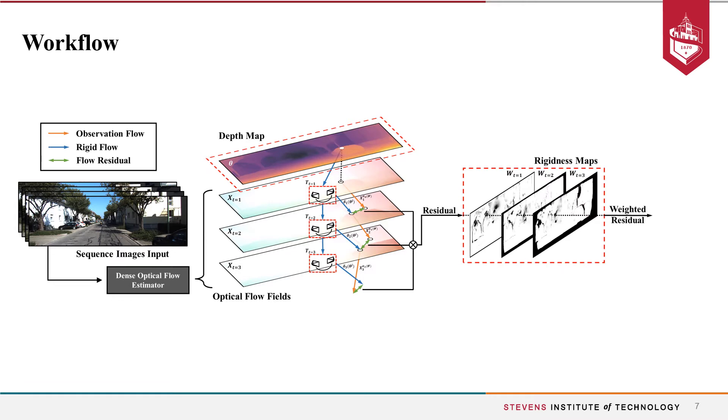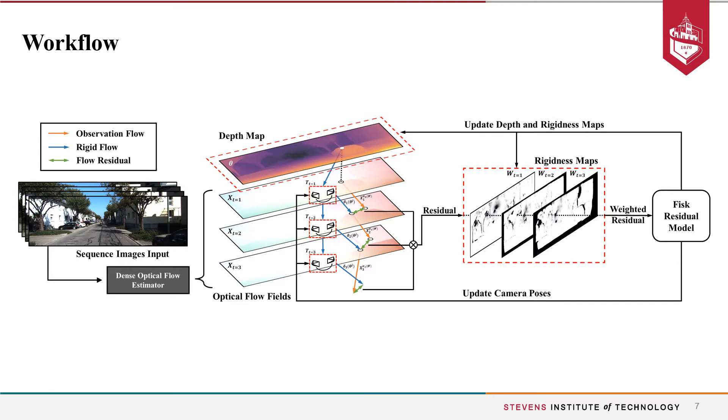Next, residues are weighted by the rigidness maps where pixels belonging to occlusion, outliers, or moving objects are down-weighted in our visual odometry estimation. Finally, the weighted residues are used to update our visual odometry estimates governed by the Fisk residue model.